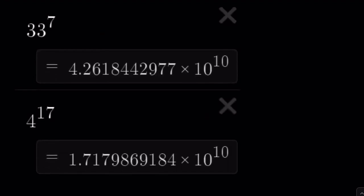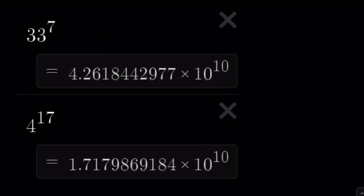Let's take a look at the numerical values and we'll be done. So the numerical values are as follows. 33 to the 7th power is 4.26 something times 10 to the 10th, and the other number is 1.717 something times 10 to the 10th. So they are still at the same order of magnitude, but obviously this number is greater by about 2.5 times.